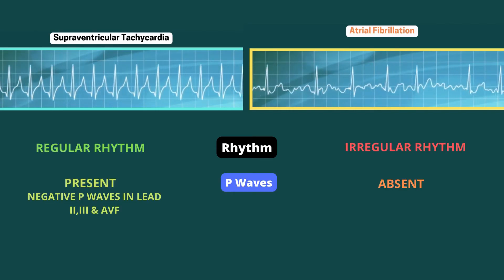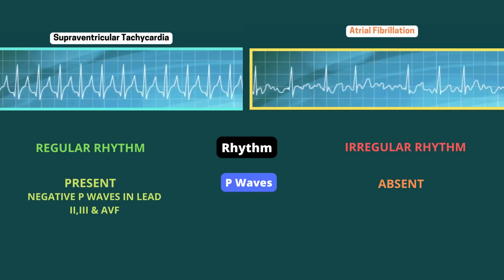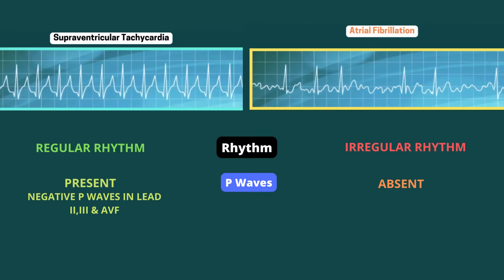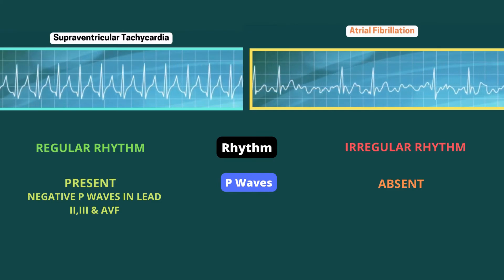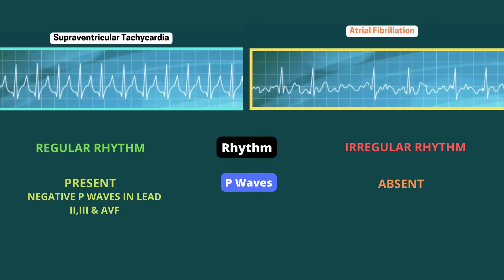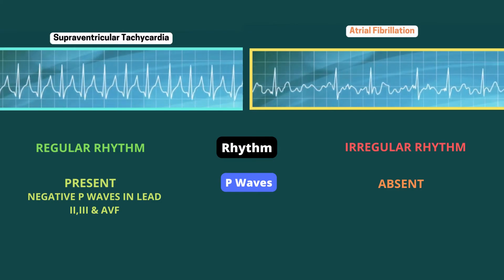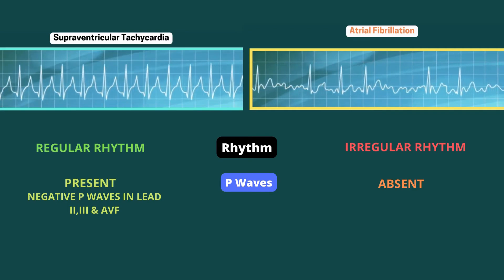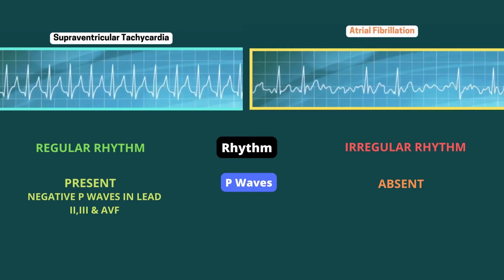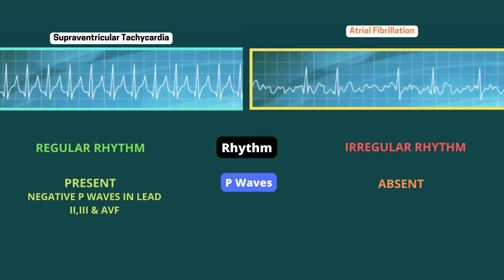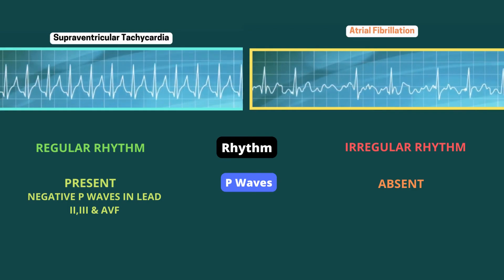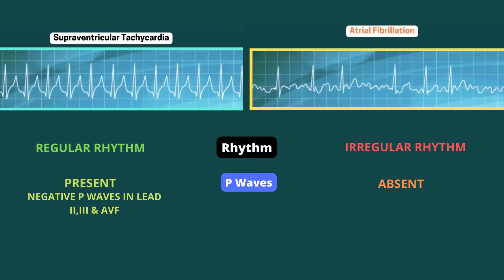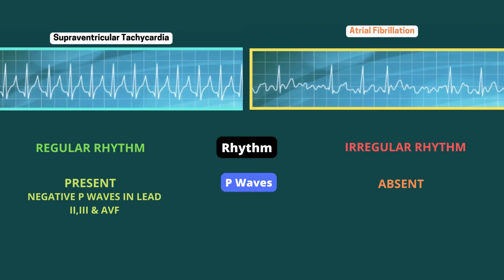In SVT, P waves are normally present but are covered by the QRS complex due to the rapid rhythm. In AF, P waves are absent. Note that in SVT, we see P wave inversion in leads 2, 3 and aVF in some cases.